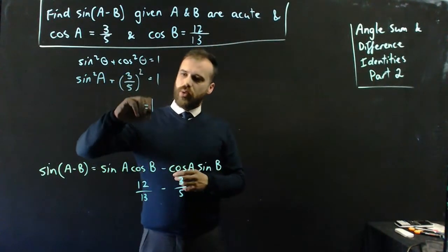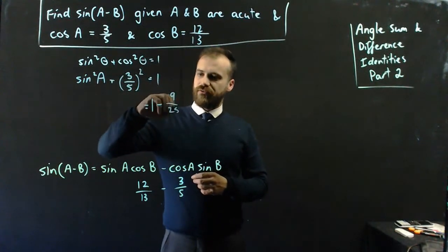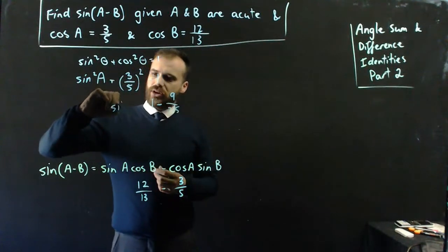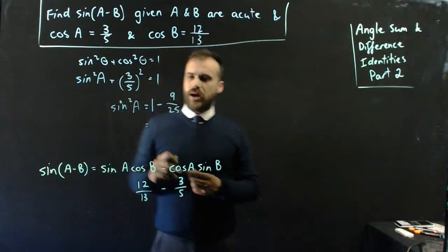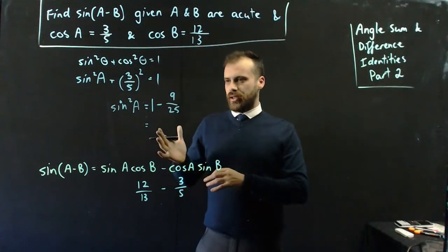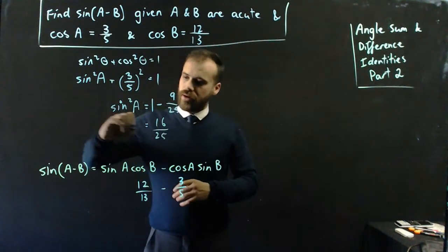So, that means that 1 minus 9 on 25, so 3 on 5 squared is 9 on 25, is sine squared a. 1 minus 9 on 25, that's 16 on 25.